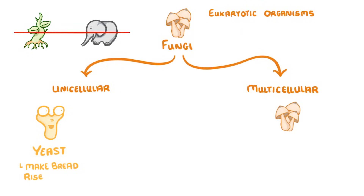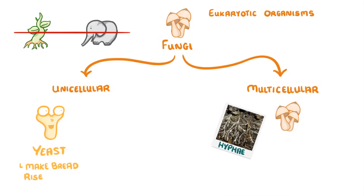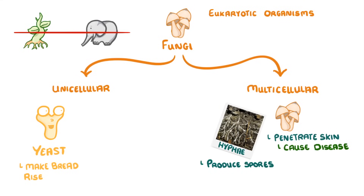Often the multicellular ones have long thread-like structures called hyphae which come out of the main body and spread through the soil. Occasionally though, these hyphae spread over plants or even penetrate human skin and cause disease. The hyphae can also produce spores which spread easily and grow into new fungi.